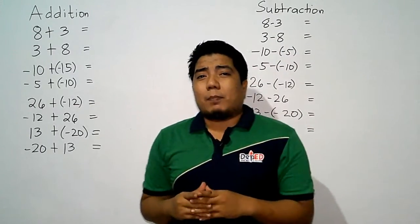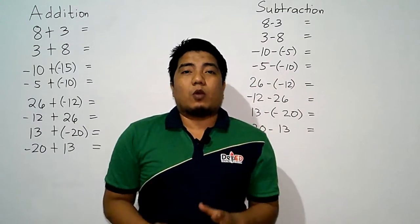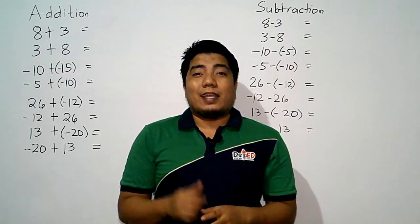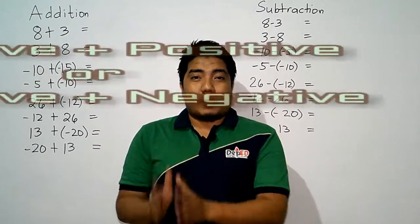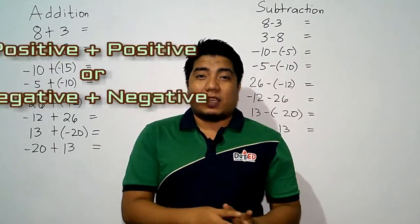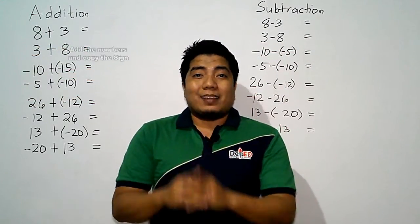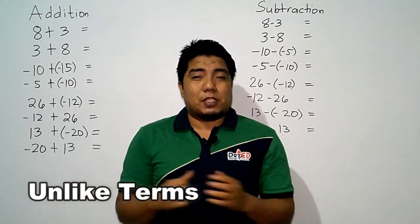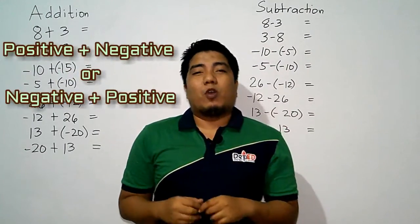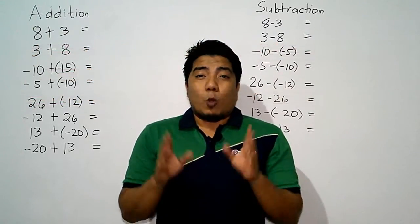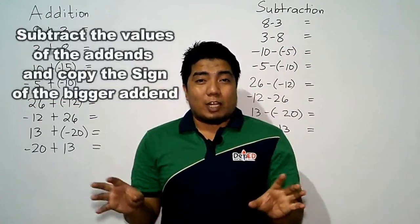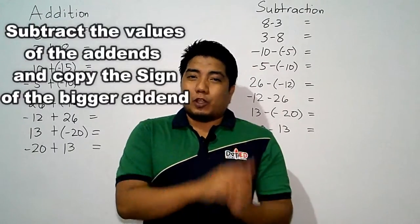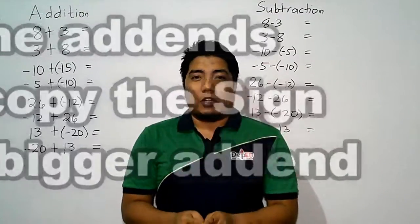If you can still remember our video about addition of integers, there are only two rules in adding integers. The first one is that if you are adding like terms — meaning positive plus positive or negative plus negative — you add the numbers and copy the sign. If you have unlike terms — meaning positive plus negative or negative plus positive — you subtract the values of your addends and then copy the sign of the bigger addend for your sum.